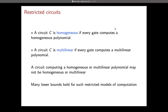Two examples of restricted circuits: we say a circuit is homogeneous if every gate computes a homogeneous polynomial. Of course, a homogeneous circuit computes a homogeneous polynomial. But we may have some clever way to compute a homogeneous polynomial with some intermediate steps not being homogeneous.